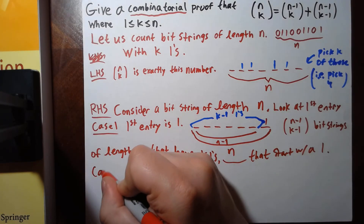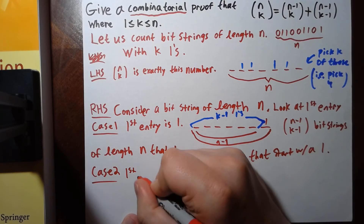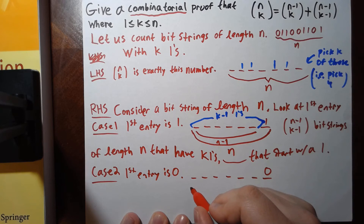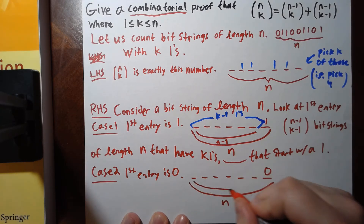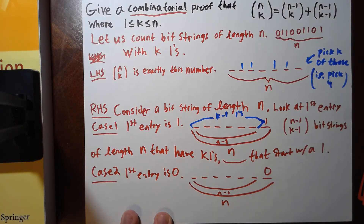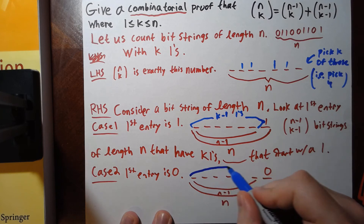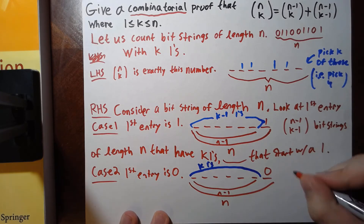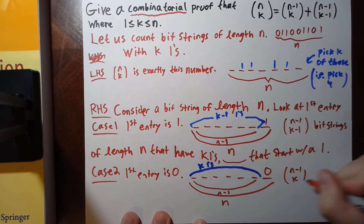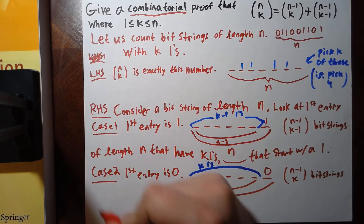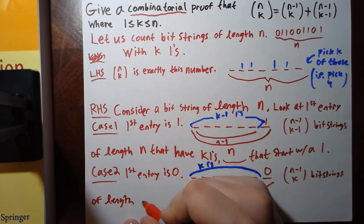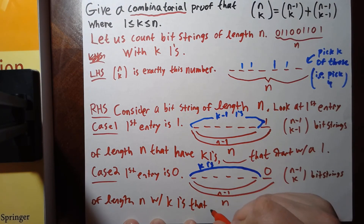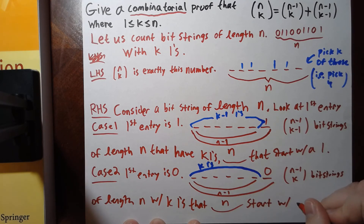This doesn't capture all of them, because what happens if the first entry is zero? You get a bit string starting with 0 followed by n minus 1 remaining entries. Since there's a zero in the first position and we want k ones total, you need k ones in those n minus 1 remaining positions. That tells us there are n minus 1 choose k bit strings of length n with k ones that start with zero.